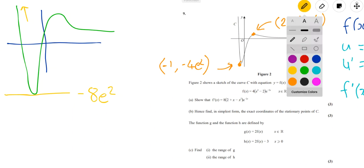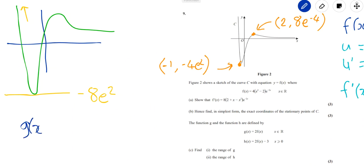So the way that we can write the answer to that question, we can write the range as g of x. There's no upper limit, but there is a lower limit. So it's always going to be greater than or equal to, because it can equal that point as well. Greater than or equal to minus 8e squared. And that's it. That's the range for that part. Hopefully you got that one right.